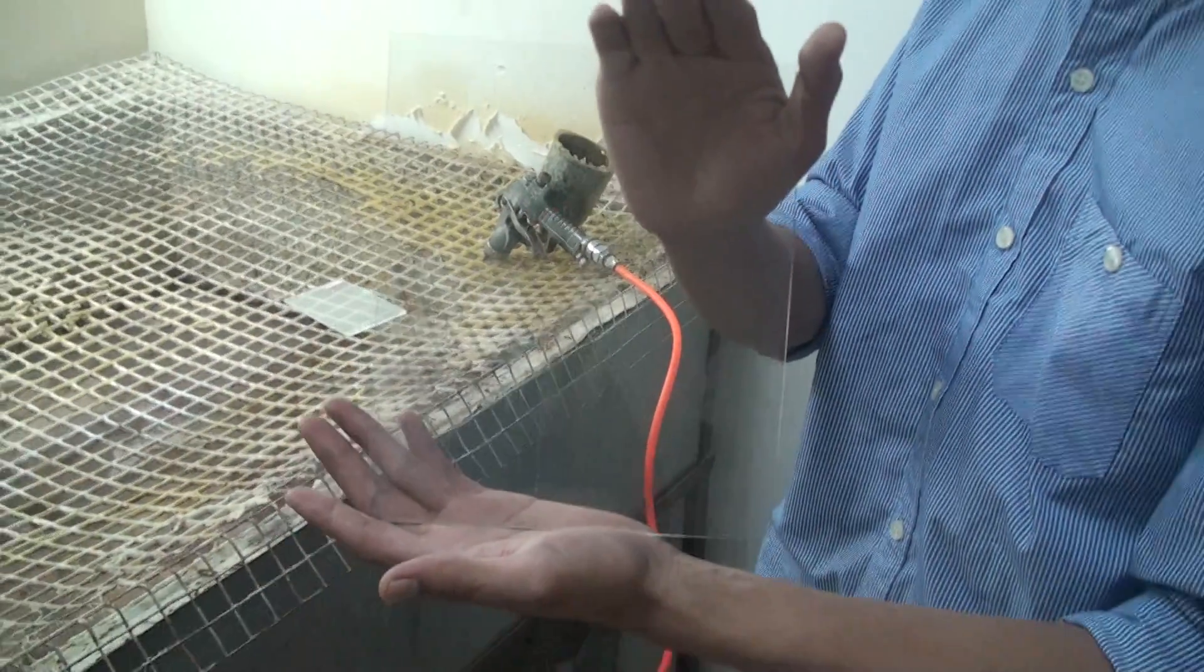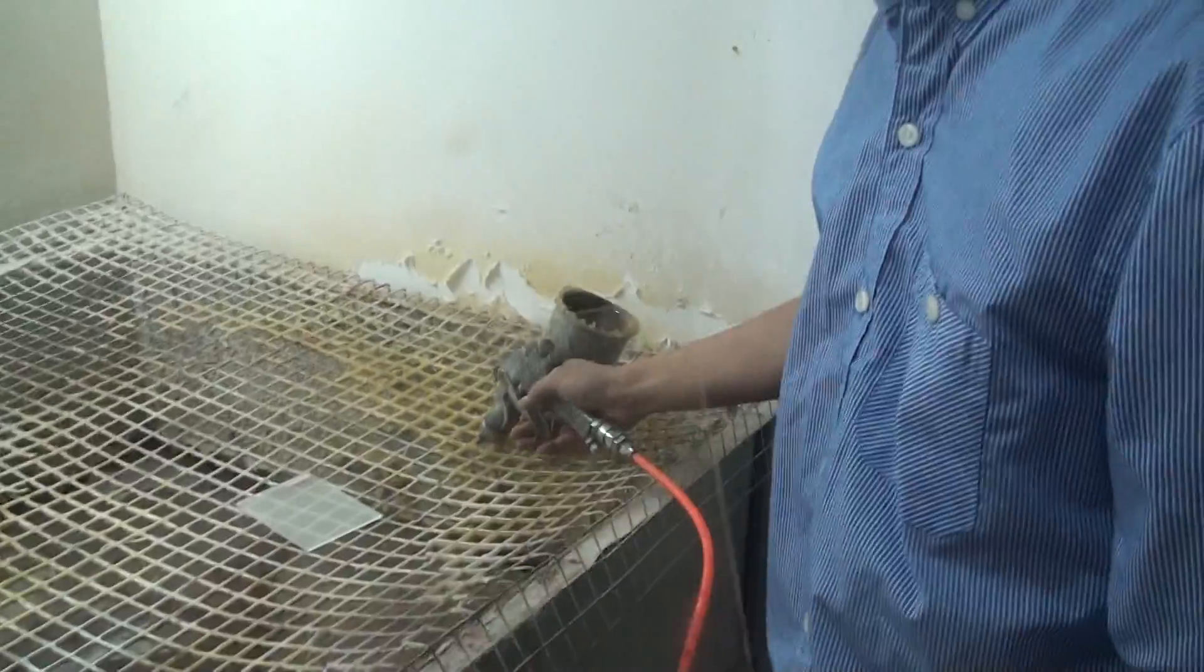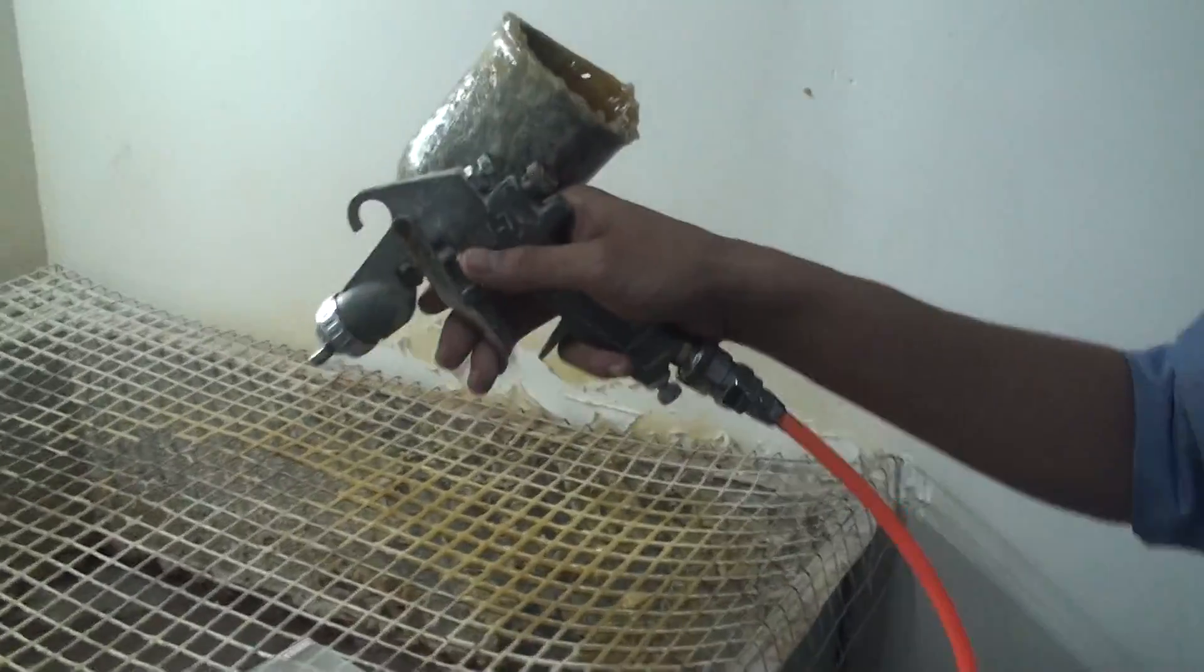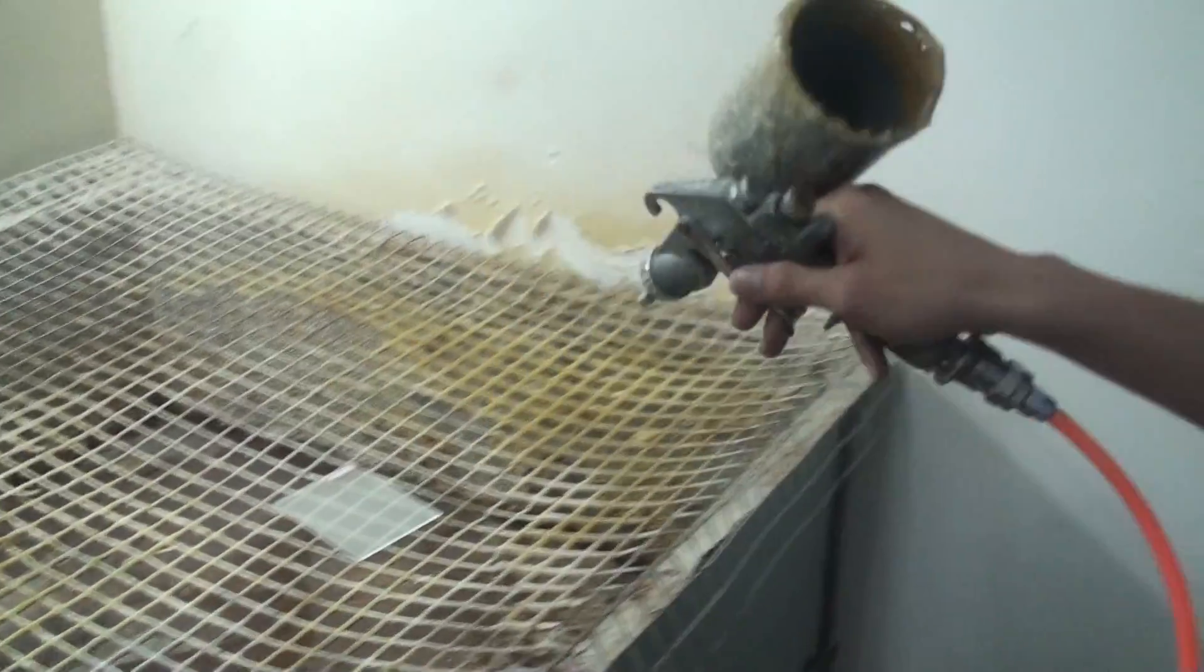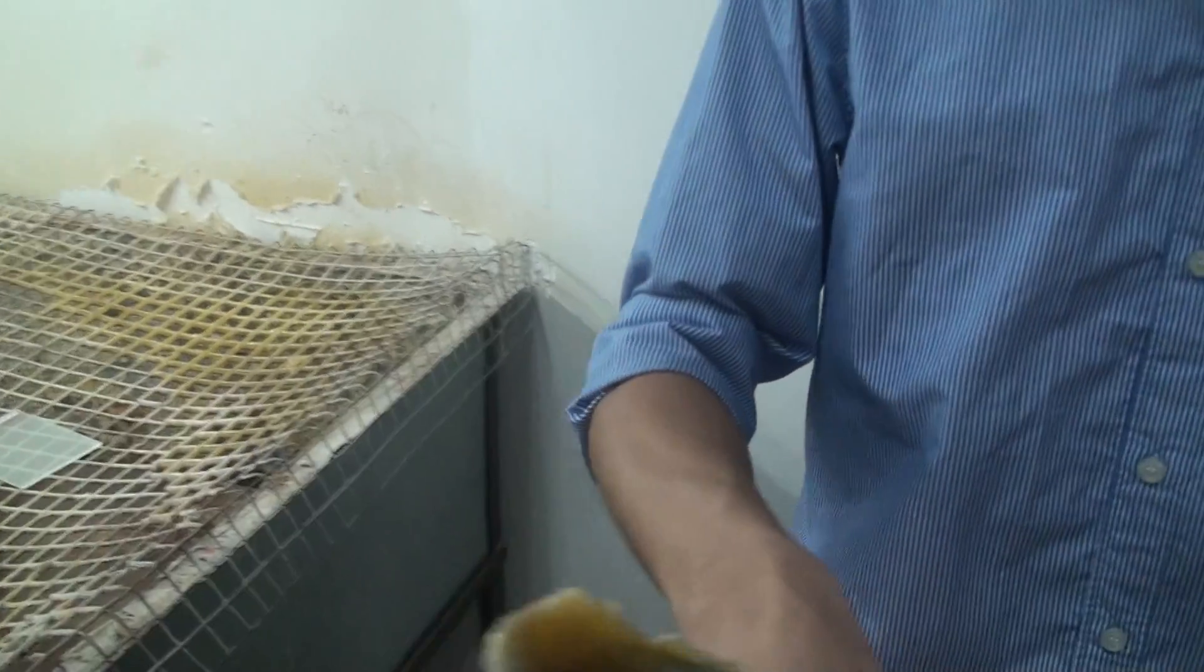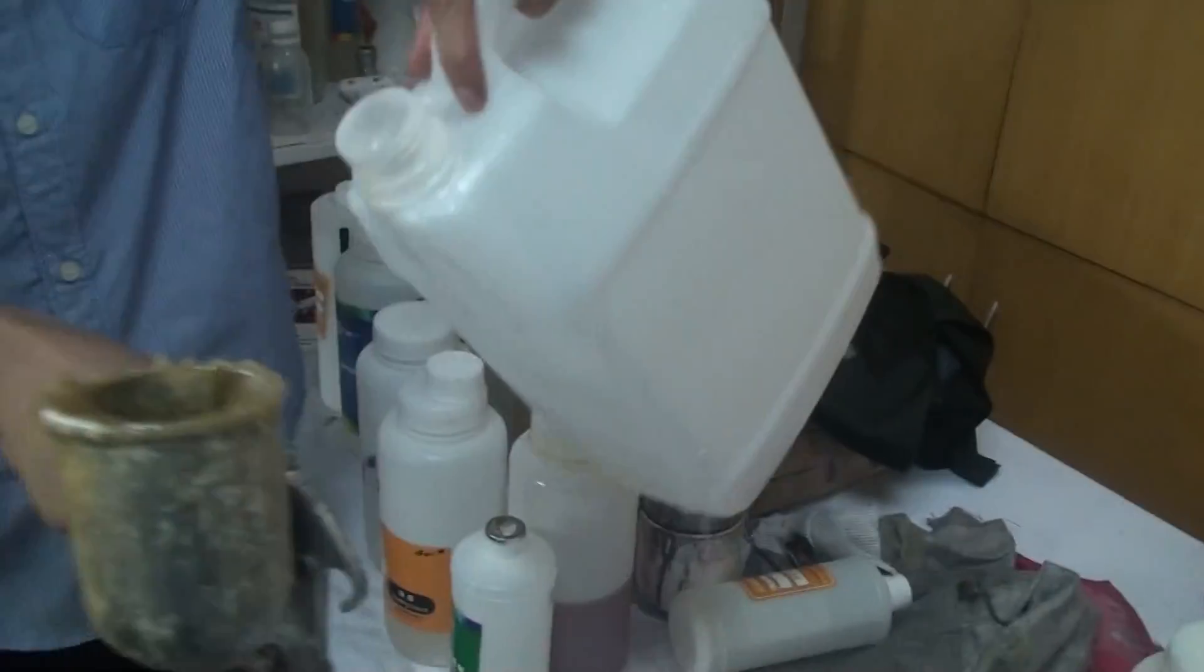This is a piece of glass. And this is the sprayer. Now we're gonna put some coating into it.